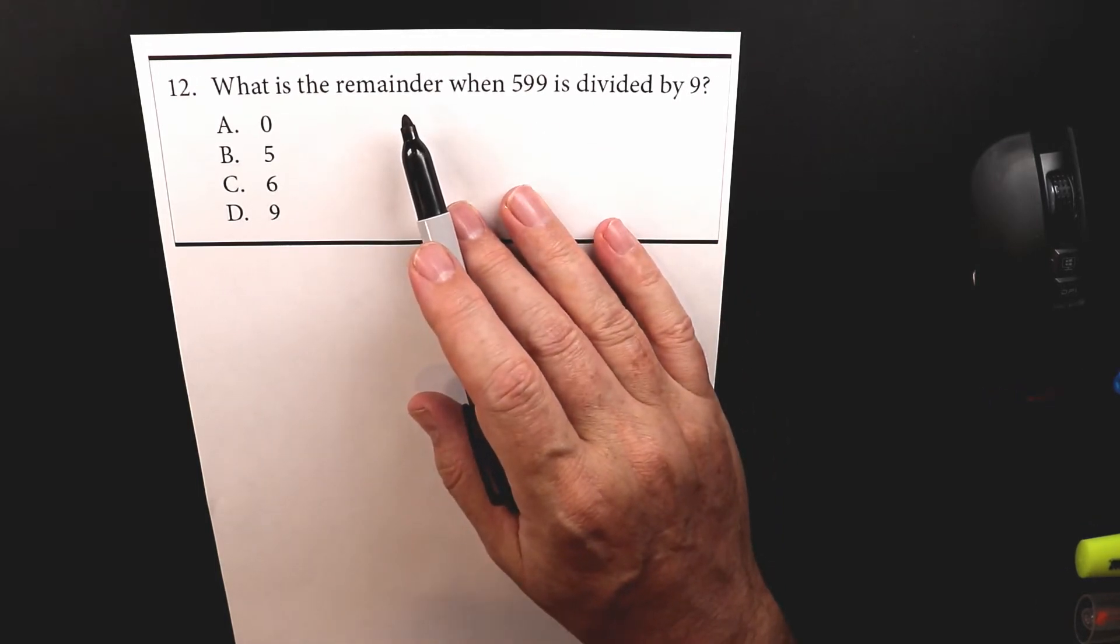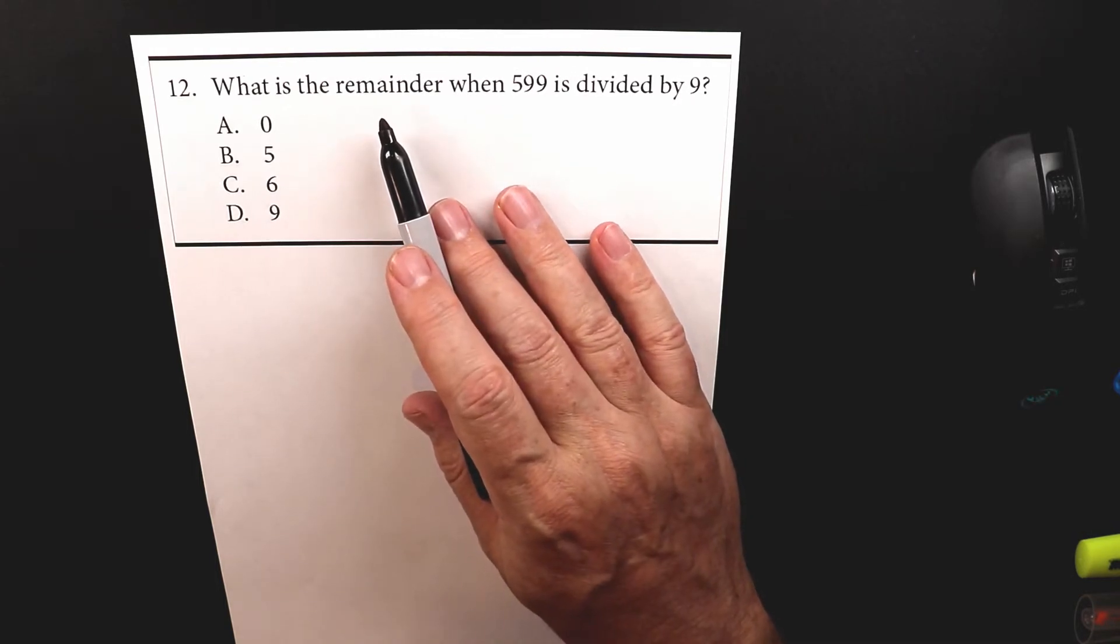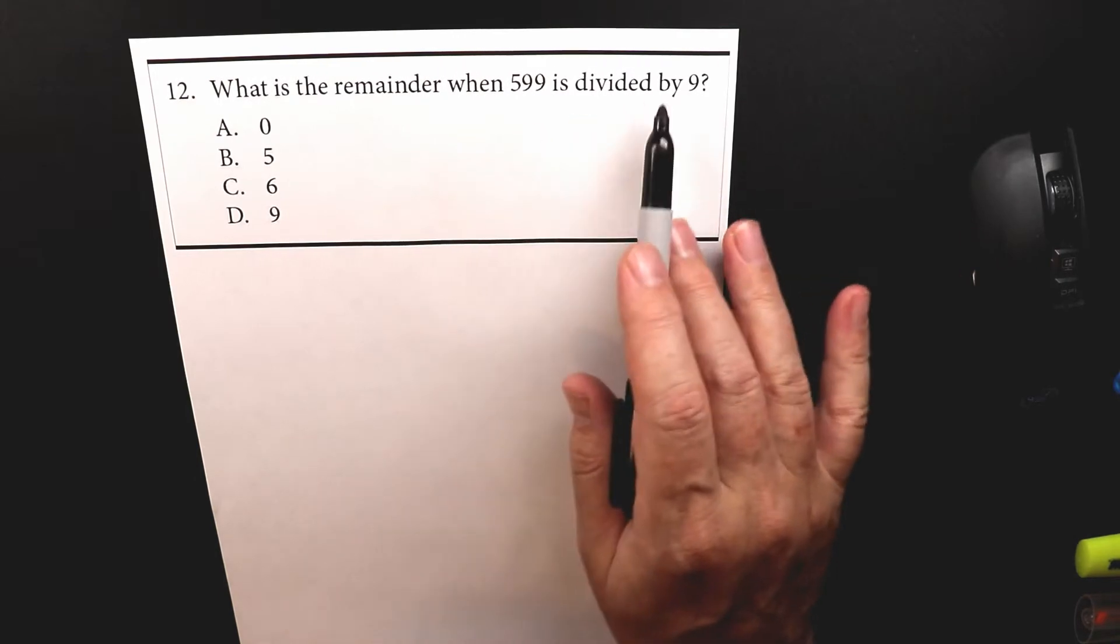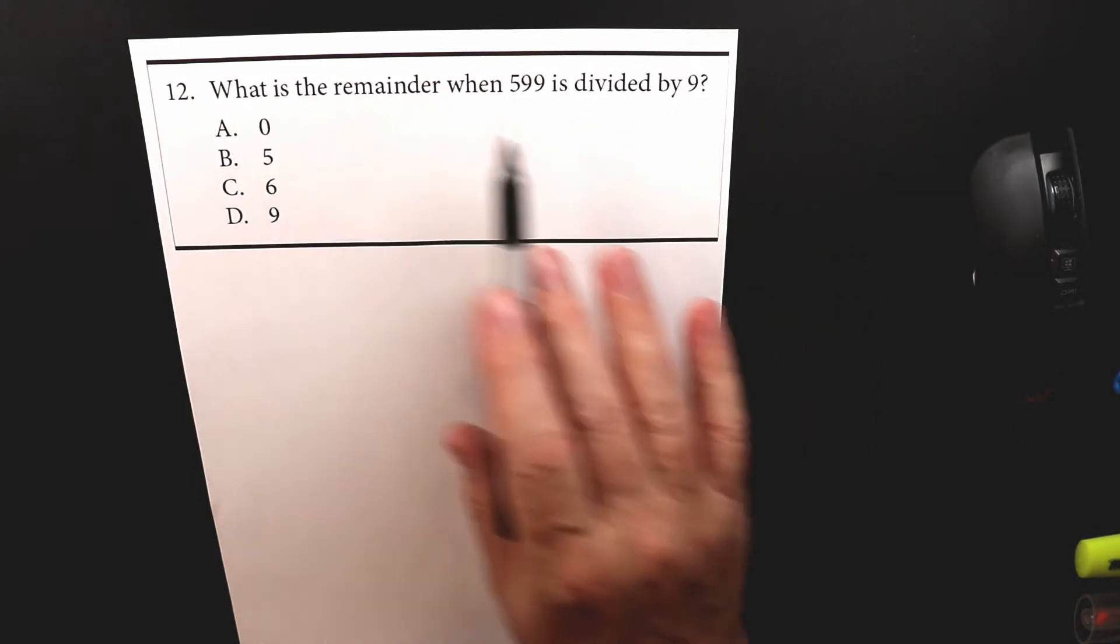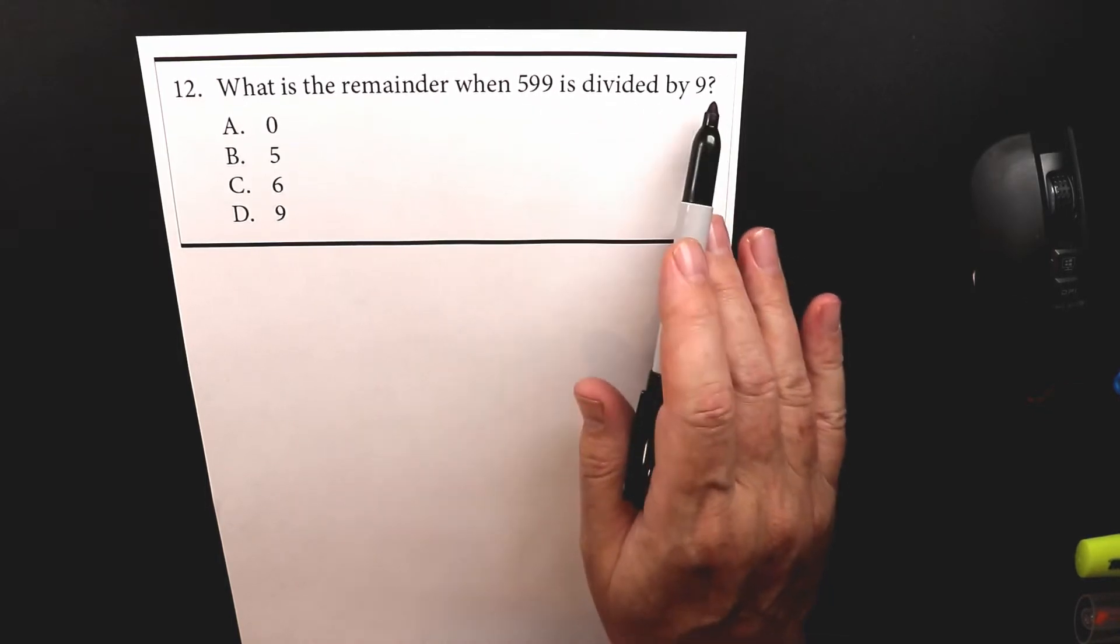So you started doing remainder for division probably in grammar school, maybe fifth grade, sixth grade, fourth grade, somewhere around there. Now it's asking you to divide it by nine. So what is the remainder when 599 is divided by nine?